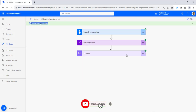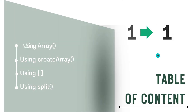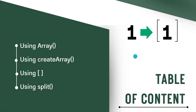You can see the flow ran successfully and all the string integers have been converted to an array. That's all for today. Do subscribe to our channel to see more free video tutorials on SharePoint, Power Apps, Power Automate, machine learning, and many more. Thanks for watching.